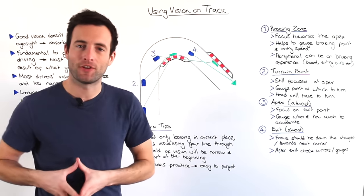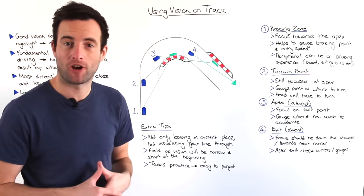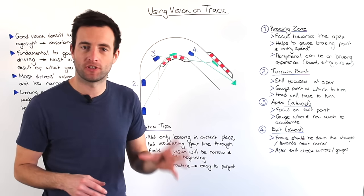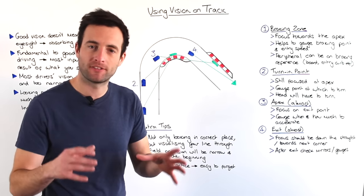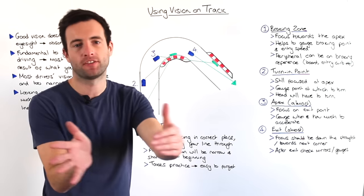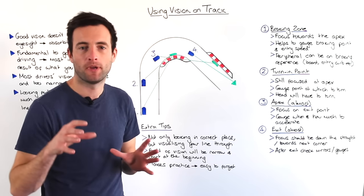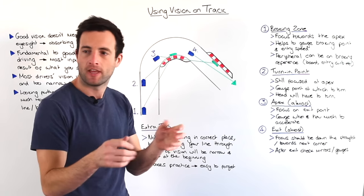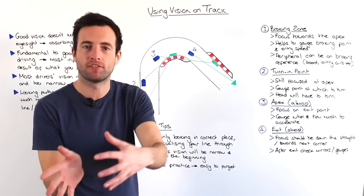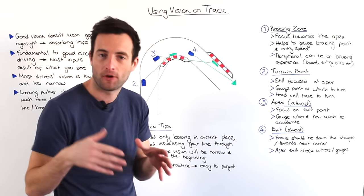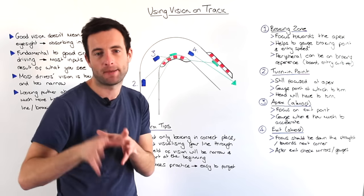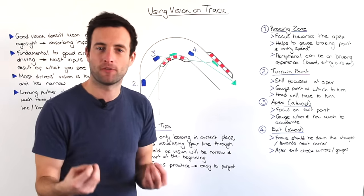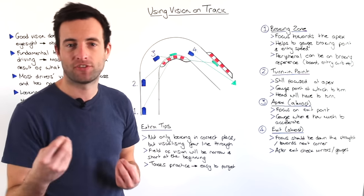Now you know exactly where you need to be looking when you're driving around the circuit. However, it's not only important to be looking in the correct place — it's also important to be visualizing the line as you come in and through the corner. So when you're on the brakes, you're looking across at the apex and you can actually visualize where the car is going to go as you bring it into the apex and beyond towards the exit. That way, you'll be very consistent and you'll be able to be on the perfect racing line each and every lap.